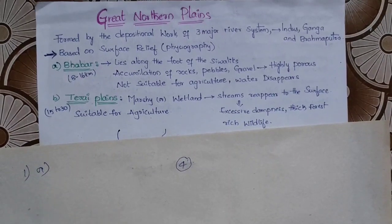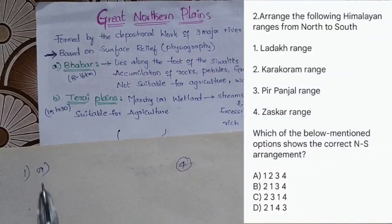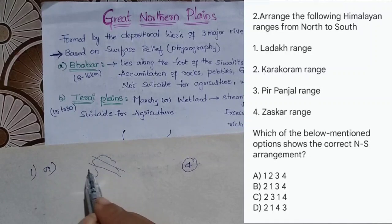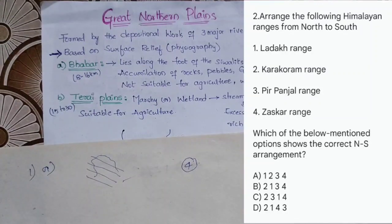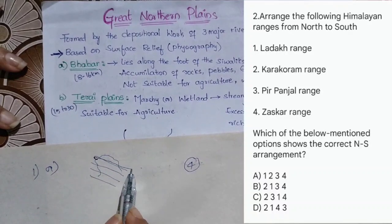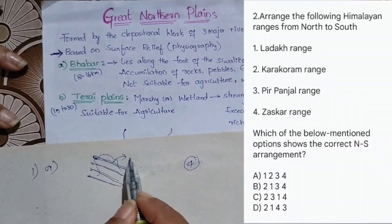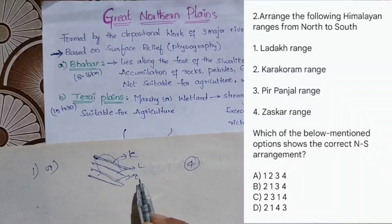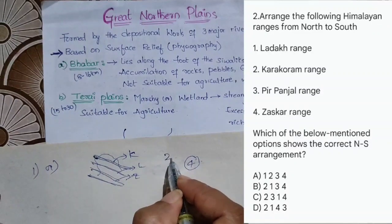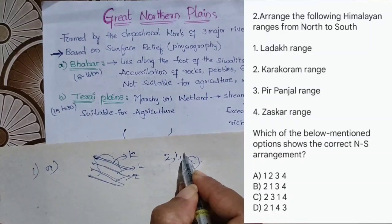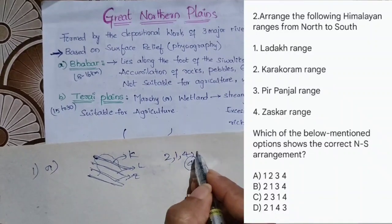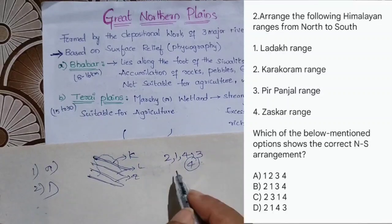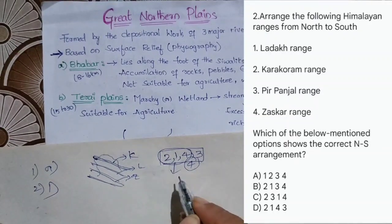The next question: arrange the following Himalayan ranges from north to south. We have to arrange: Ladakh Range, Karakoram Range, Pirpanjal Range, and Zaskar Range. From north to south, the correct arrangement is: Karakoram Range first, then Ladakh Range second, Zaskar Range third, and Pirpanjal fourth. So our answer is option D: 2, 1, 4, 3.